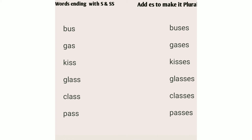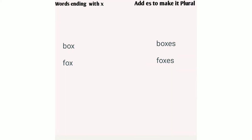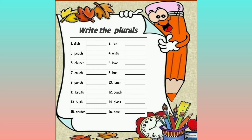The plural of pass becomes passes. Now the last set of words — words ending with X, such as box and fox — we can make them plural by adding ES: boxes, foxes.